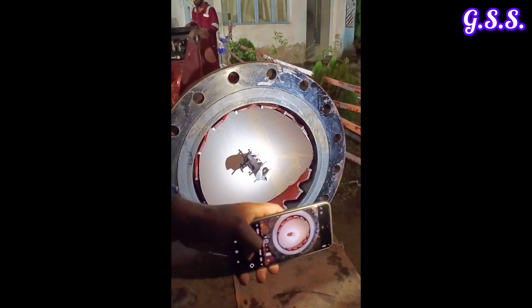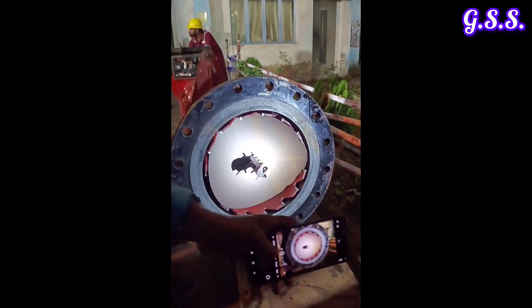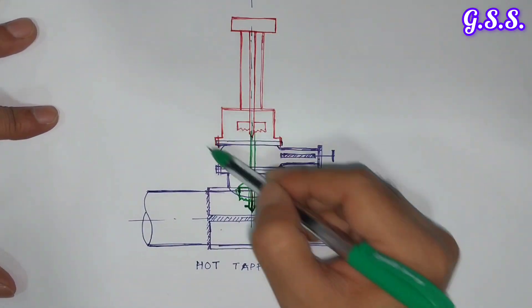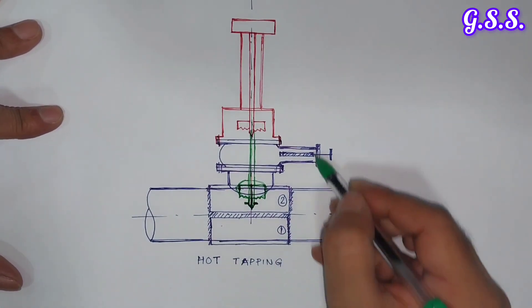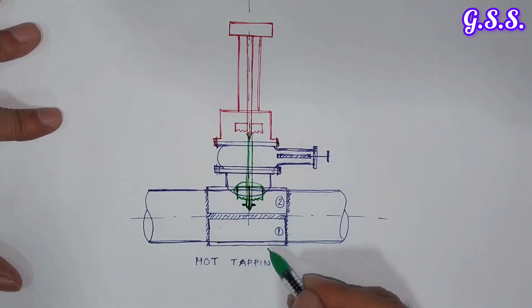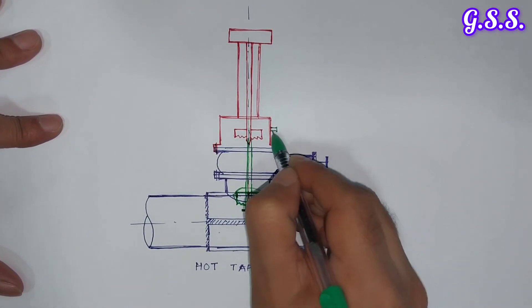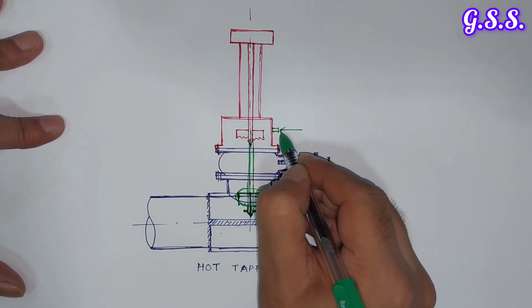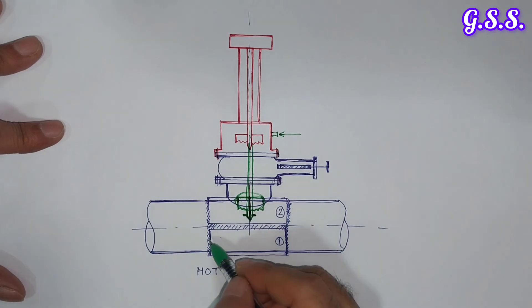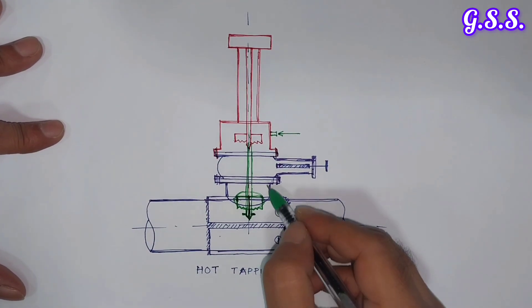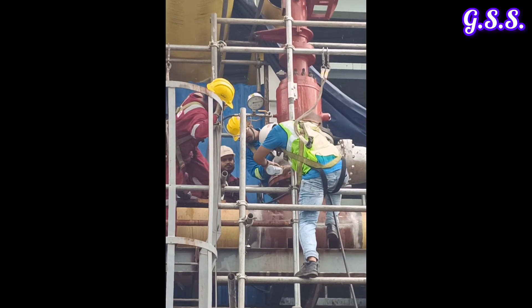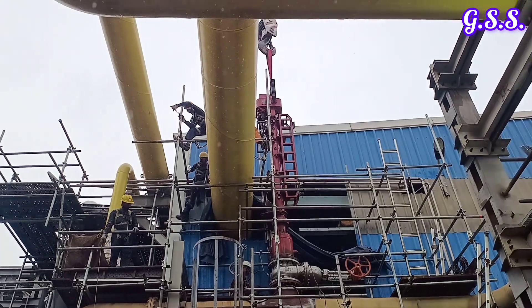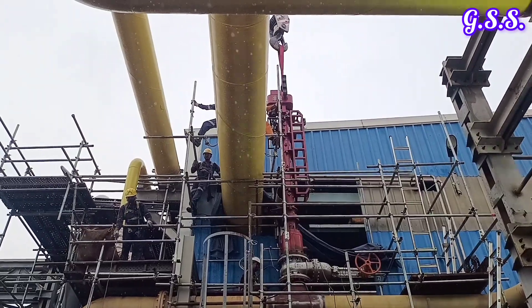After dismantling the hot tapping machine you can see the cut pipe piece taken out by the drill bit. After installing this hot tapping machine and bolting with the valve, the entire set is pneumatically tested at 1.1 times the design pressure. Nitrogen is fed from here so that the entire system is tested for any leakage. The flange joints are being leak tested using soap water. Now the entire system is ready and hot tapping will be done.